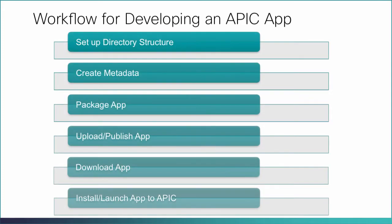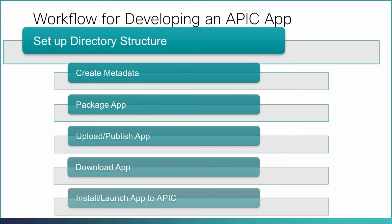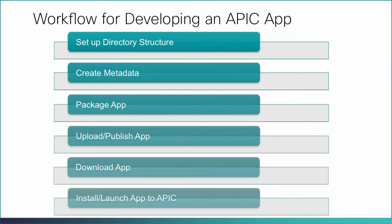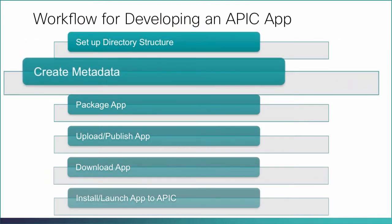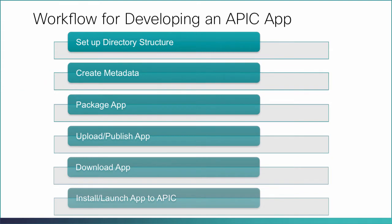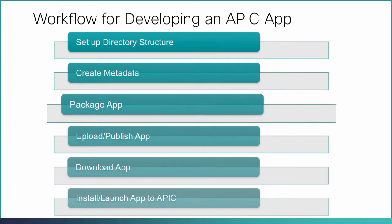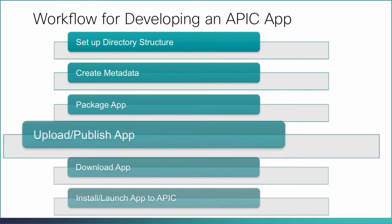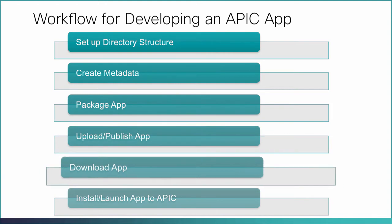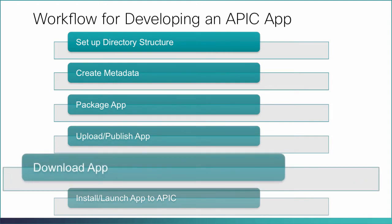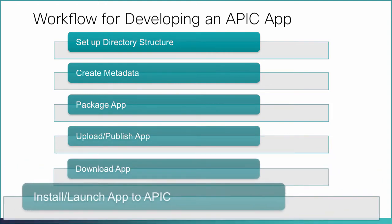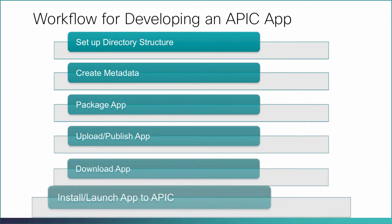Developing an APIC app involves setting up the directory structure and the files required for the application, creating the metadata for the application, packaging the application, publishing the application to Cisco App Center, downloading the application from Cisco App Center, and installing and launching the app in APIC.